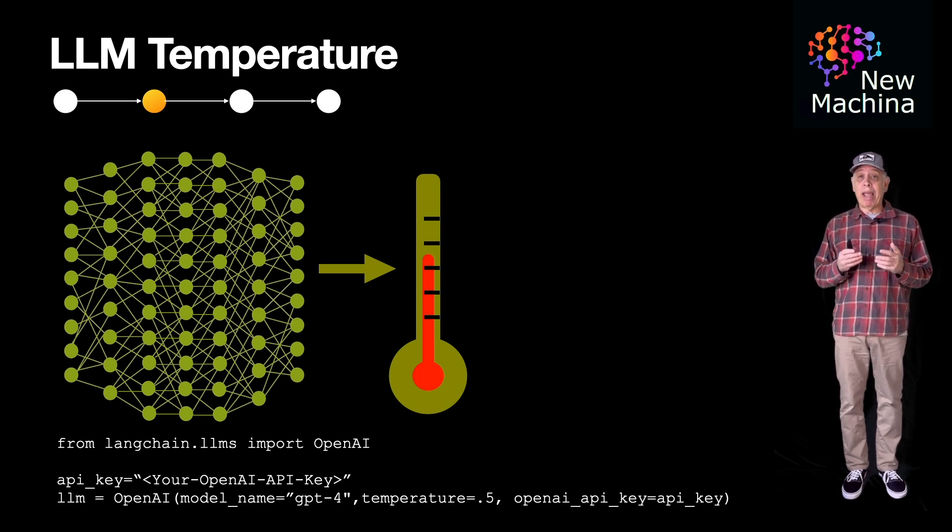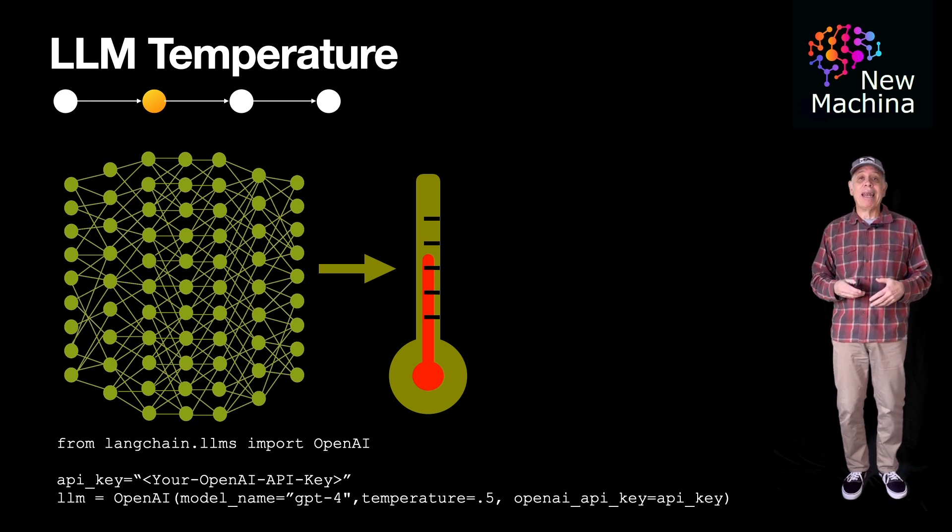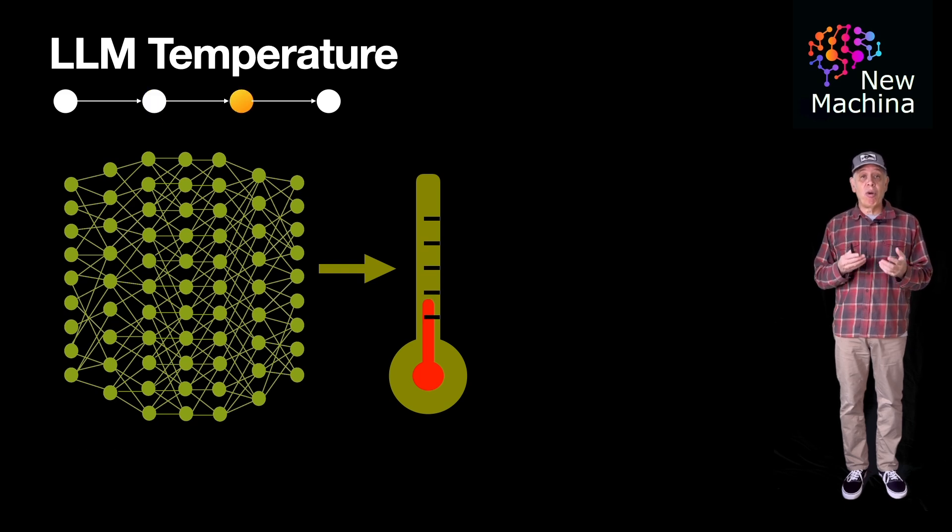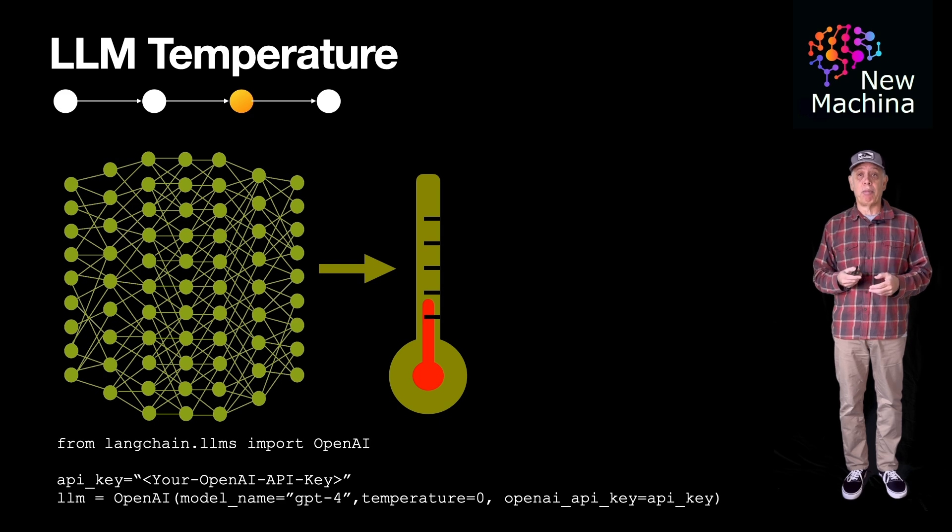You can adjust this parameter based on your use case. If your use case requires stable and consistent output, setting the temperature parameter to 0 makes it ideal for deterministic text response.